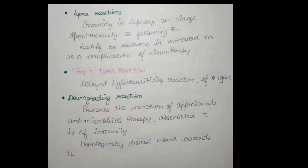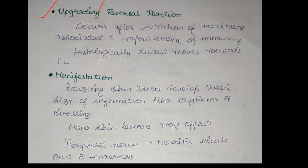Lepra Reactions are two types. The first type is a delayed type of hypersensitivity reaction, called Downgrading Reactions. In Downgrading Reactions, the patient will downgrade to Lepromatous type of leprosy, which is a very severe form. The other subtype is Upgrading or Reversal type of reaction, where the patient gets this after initiation of treatment associated with improvement of immunity, and histologically the patient will be moving towards Tuberculoid type.